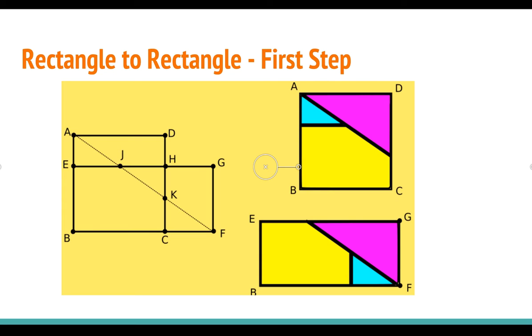To do that, let's first connect point A and point F and call the intersection J and K. Then we can move triangle JGF into triangle ADK.